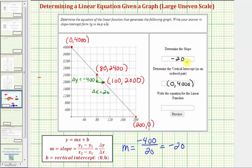Well now we know the slope is negative 20. And since the vertical intercept is the point zero comma 4,000, we also know b equals 4,000. And this is all we need in order to write the equation of our line in slope-intercept form. We would have y equals the slope of negative 20 times x plus b, so we have plus 4,000. I hope you found this helpful.